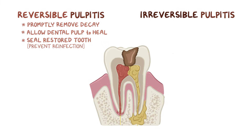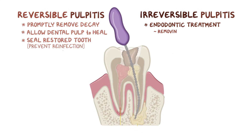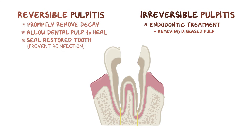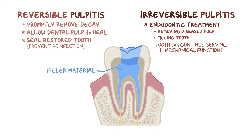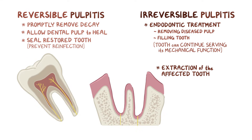In irreversible pulpitis, there are two main approaches for treatment. First, there's endodontic treatment, which involves removing the diseased pulp and filling it up with a filler material like a special cement. Although the tooth is dead, it can continue serving its mechanical function of chewing. The second approach is extraction of the affected tooth.